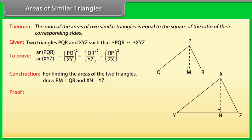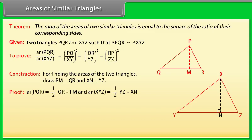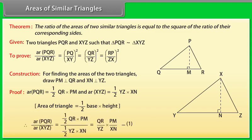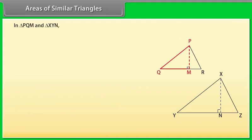Area of triangle PQR = (1/2) × QR × PM, and area of triangle XYZ = (1/2) × YZ × XN, since area of a triangle equals one-half times base times height. Therefore, area of triangle PQR upon area of triangle XYZ = (QR/YZ) × (PM/XN). Mark this as equation 1.